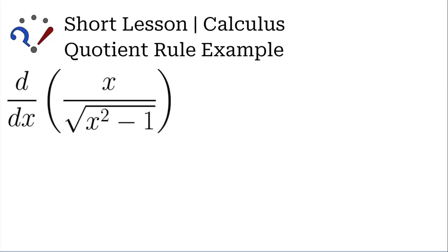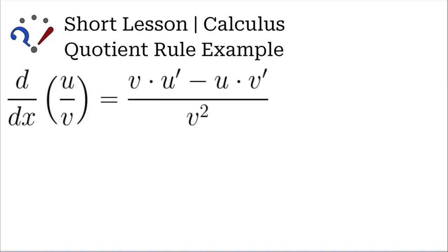This is a typical quotient rule example in calculus. So here's a short lesson, guys. Let's consider the numerator, the u, and the denominator, the v. And the rule for that is v u prime minus u v prime divided by v squared.